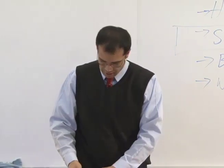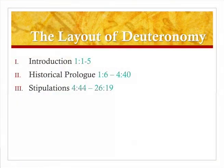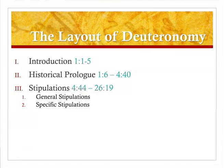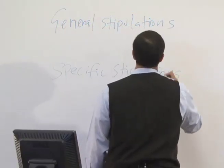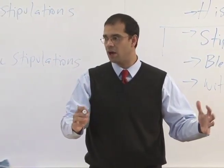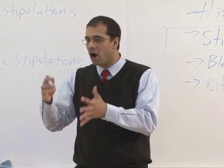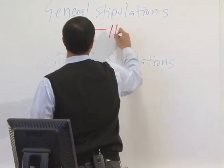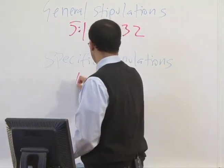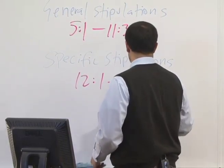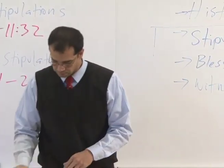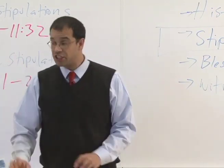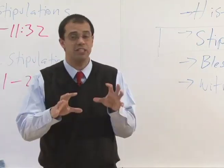Most scholars will break the stipulation section down into two broad categories: general stipulations and specific stipulations. As the names suggest, this first category are broad principles, and the second category are more detailed legal material. The first category breaks down 5:1 through 11:32, and the second one breaks down 12:1 through 26:19.